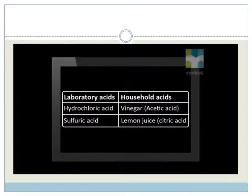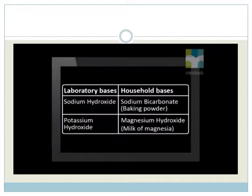Hydrochloric acid and sulfuric acid are examples of acids found in the laboratory, whereas acetic acid, which is also known as vinegar, and citric acid, commonly found in citrus fruits such as lemon juice, are examples of household acids. Sodium hydroxide and potassium hydroxide are examples of bases found in the laboratory. Sodium bicarbonate and magnesium hydroxide are examples of household bases.